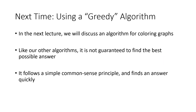We're going to find an algorithm to solve this problem — called a greedy algorithm. Like other algorithms, it's not guaranteed to find the best possible answer, but it follows a simple common-sense principle and finds an answer quickly, even though that answer might not be optimal. That's what we'll be talking about in this section.